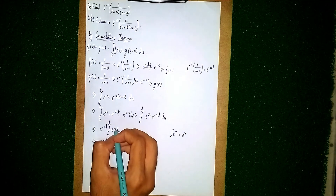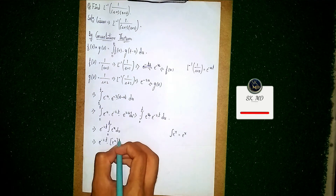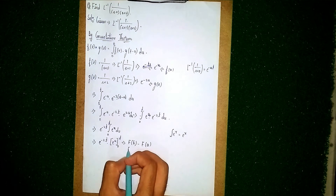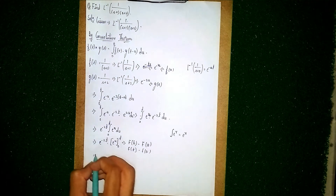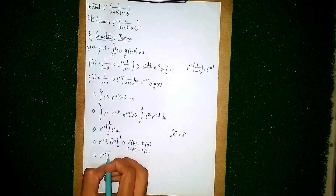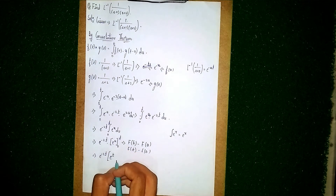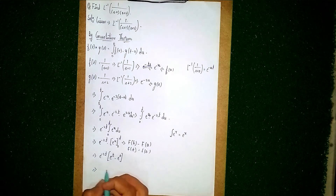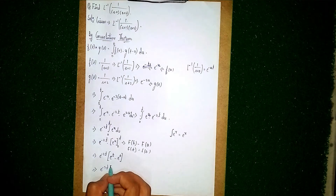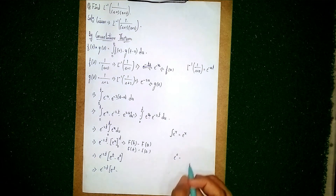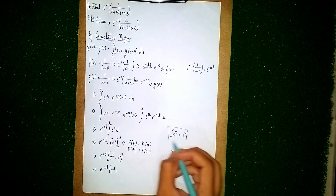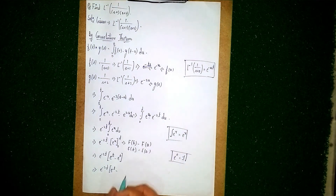Now apply the limits using F(b) minus F(a). Here b is t and a is 0. So we get e to the power minus 2t times [e to the power t minus e to the power 0]. Always remember: e to the power 0 equals 1. So it becomes e to the power minus 2t times (e to the power t minus 1).